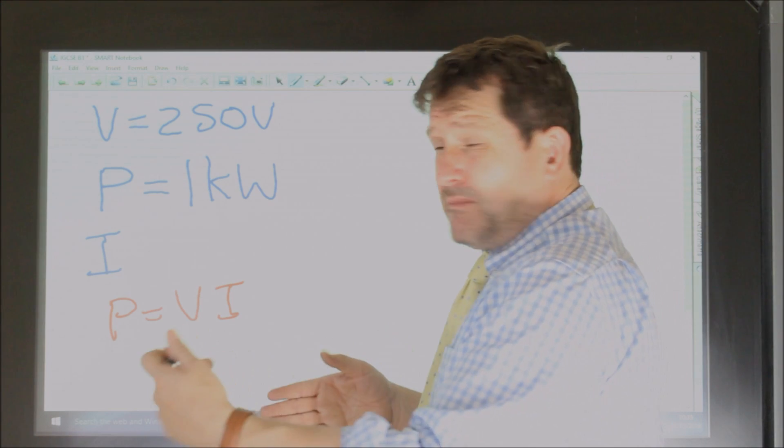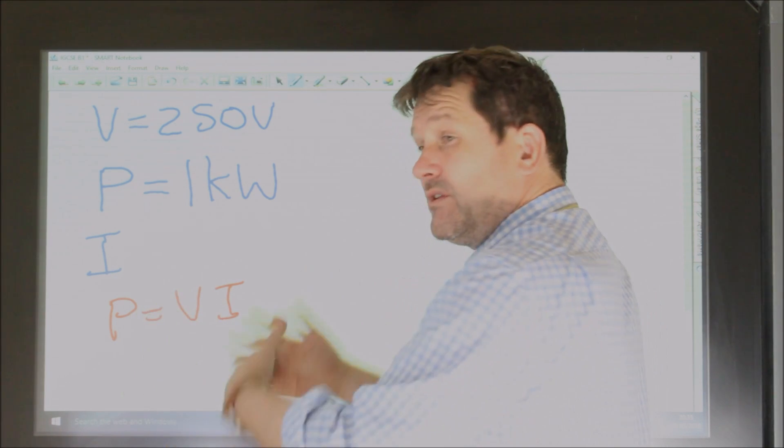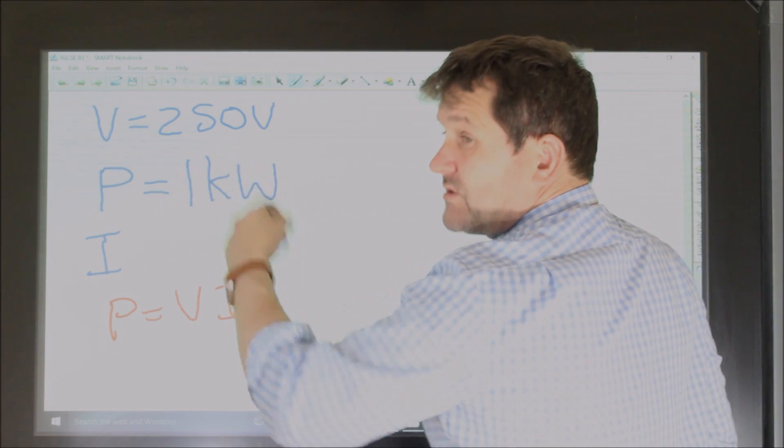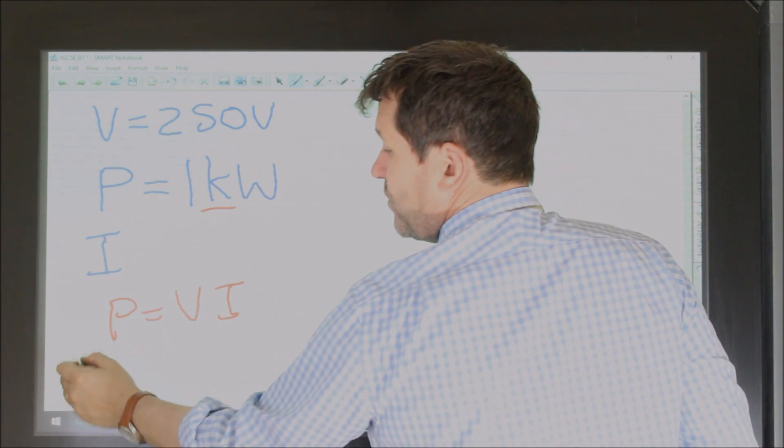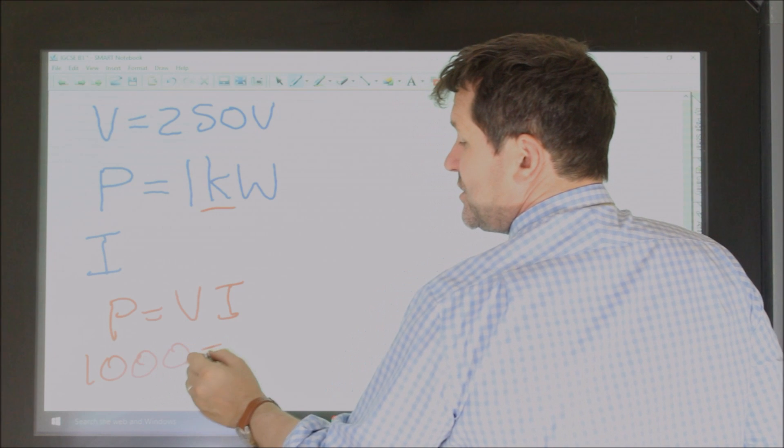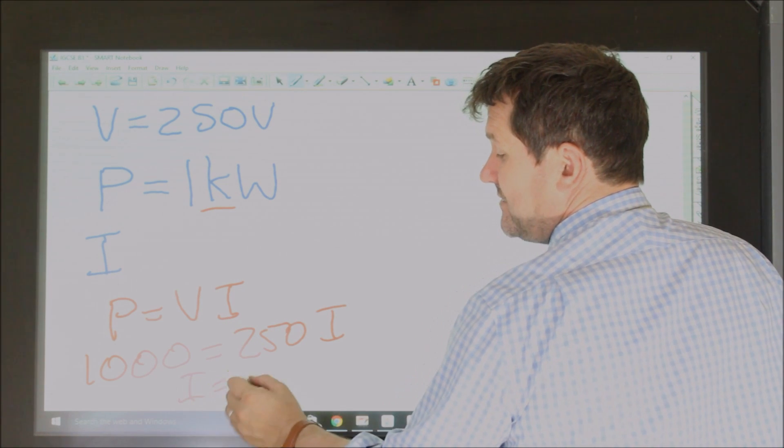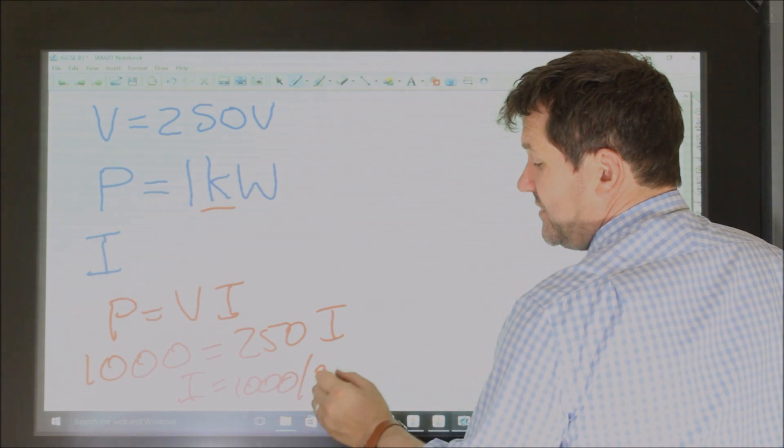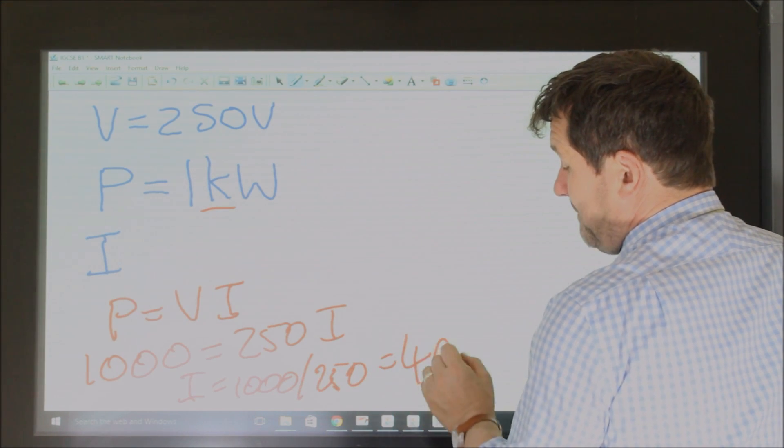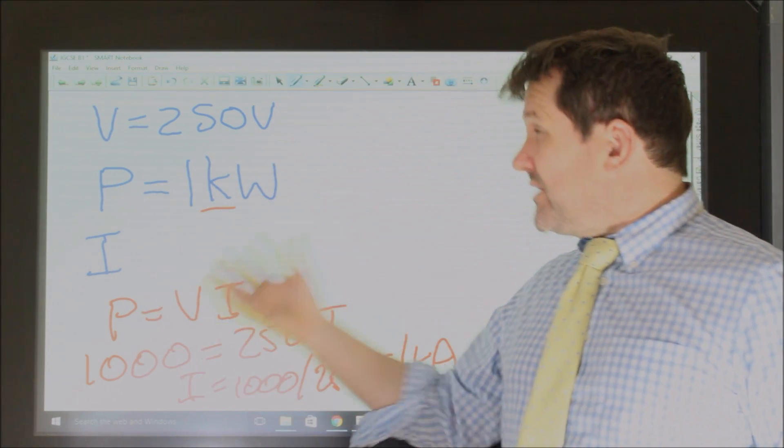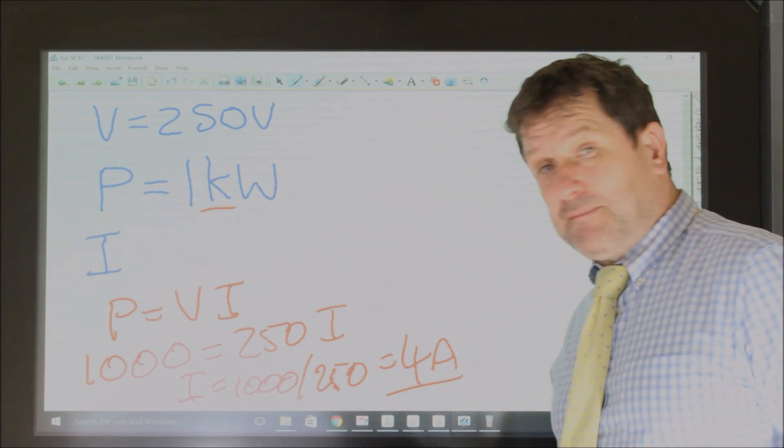And now there are two options, you can substitute your numbers now or you can rearrange now and vice versa. So power is one kilowatt. Remember, kilo is thousand. So 1000 is 250I. So I is 1000 divided by 250, which is four amps. Now, so we've just worked out that the current flowing through this device is four amps.